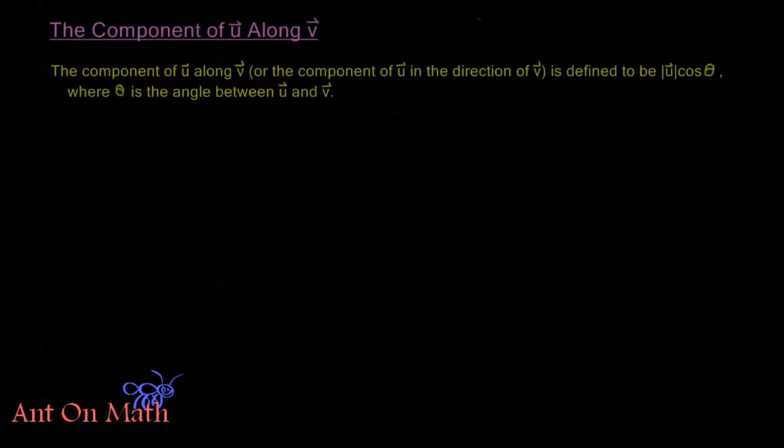Hello and welcome back to Anton Math. In this video, we're going to talk about the component of a vector u along a vector v. The component of u in the direction of v is defined to be the magnitude of u times cosine theta, where theta is the angle between u and v.